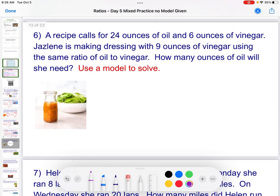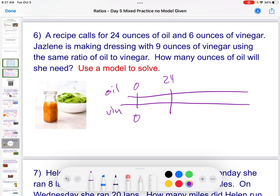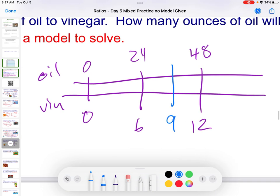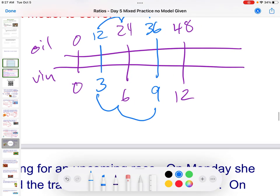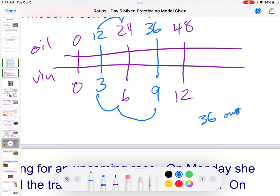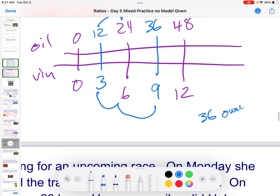Let's try this again. A recipe calls for 24 ounces of oil and 6 ounces of vinegar. Oil. Vinegar. Zero. Zero. Draw this out. 24 ounces of oil, 6 ounces of vinegar. So, 24 to 6. Jazmine is making dressing with 9 ounces of vinegar. So, if I doubled this, I would get 12 ounces of vinegar, and I'd get 48 ounces of oil. My problem is I needed 9. So, what was our method? What do we have to do? Since this is in between, let's break this down. 3, 12. Now, I can do 3, 6, 9, 12, 24, 36. 3 times 3 is 9. 3 times 12 is 36. 36 ounces of oil.